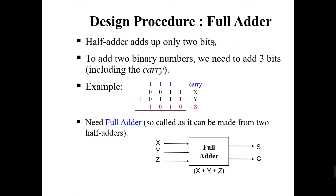Here is the block diagram for a full adder. There are three inputs: X, Y, and Z, and two outputs — one for the sum part and one for the carry part. The sum will be denoted as S and the carry will be denoted as C.